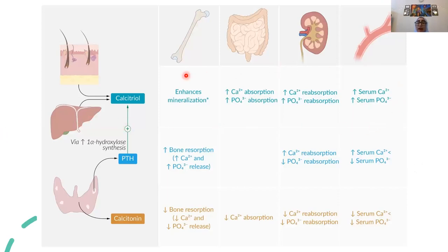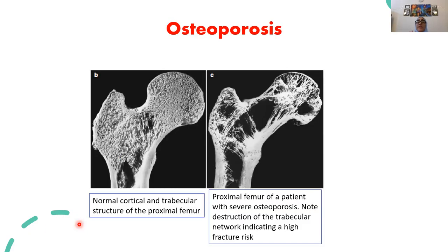This slide summarizes the effects of vitamin D on bone, gut, and kidneys, and the effects of PTH on bones, kidneys, and vessels. Finally, calcitonin is another hormone involved in calcium regulation. In osteoporosis, there is a loss of bone mineral density, starting with loss of trabecular bone — as you can see in the image, normal cortical bone is visible on the outer edges while the trabecular bone in the center is progressively lost.